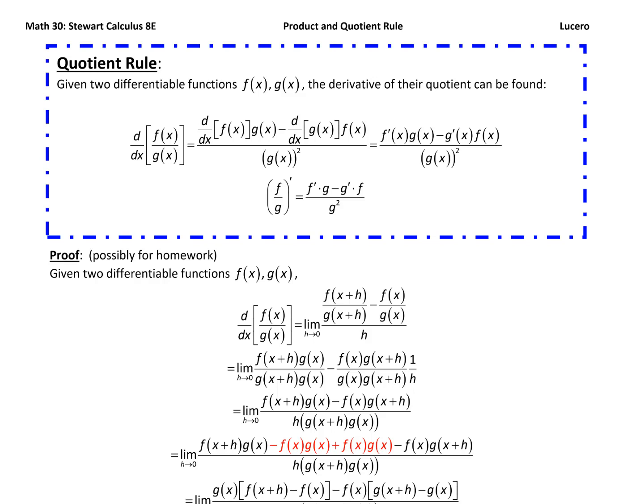For the quotient rule, we just wrapped up the product rule — how do we take the derivative of a product of two functions. Now let's talk about how we take the derivative of a quotient of two functions. So given two differentiable functions, the derivative can be found as follows. I've got the proof below; I don't think I'm going to do the proof on the video, but similar to how we did the product rule, which we did prove on video.